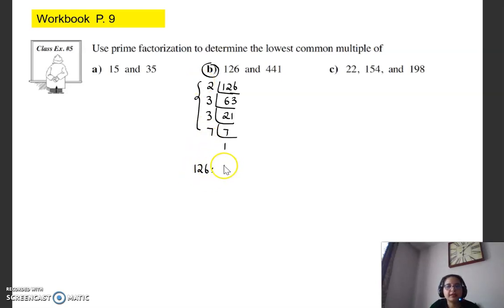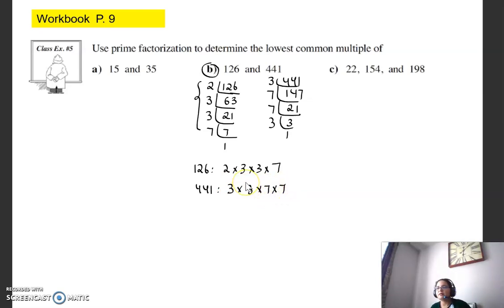So 126 can be written as 2 times 3 times 3 times 7, whereas 441, again we need to do the prime factorization on that, and once again I'm going to use a table. So I will use, in this case I think three should be able to divide it. Four plus four is eight, eight plus one is nine. Yep, three will be divisible by nine. So that gives me 147, and then this can be divided by seven. If you're doing it a little bit differently, it doesn't matter as long as we get the same prime factors in the very end.